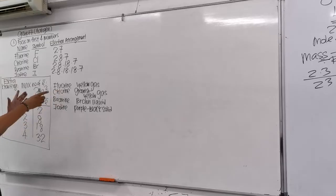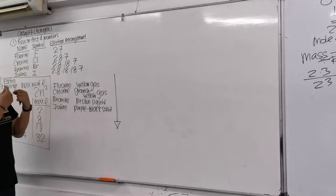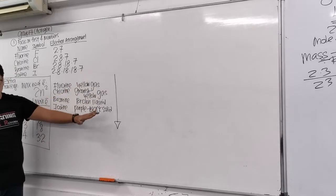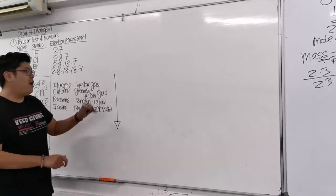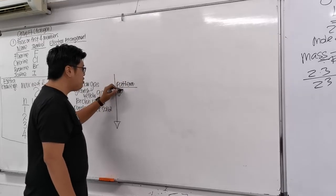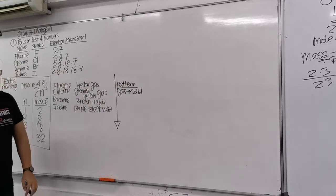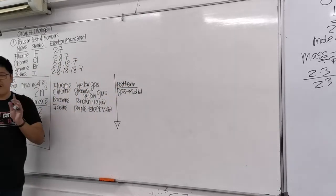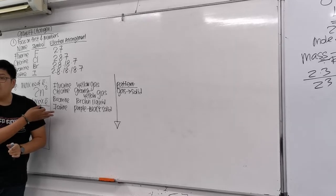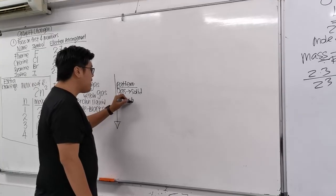Can you see a pattern going from top to bottom? First, the state changes: gas slowly becomes liquid, then becomes solid. Second, for color: the color becomes darker and darker going down the group. These are important trends and patterns to recognize.